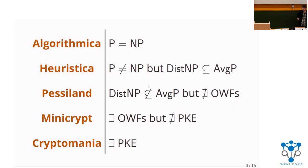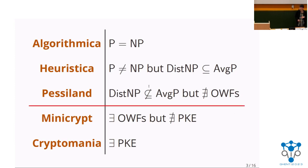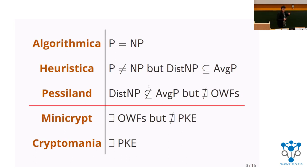The only thing you need to know for this talk is that there's a line we can draw in the sand between Pessiland and Minicrypt. Above this line, classical computationally secure cryptography is essentially impossible. For all interesting classical computational primitives, it's been shown that assuming those things exist implies the existence of one-way functions. Below this line, at least some form of classical cryptography is possible because we have one-way functions.